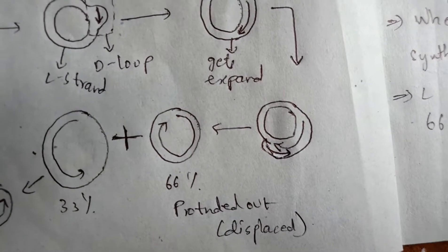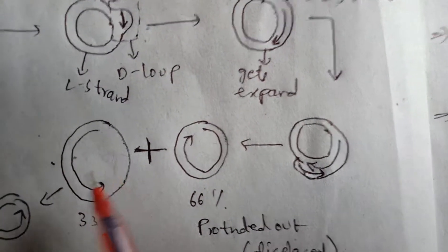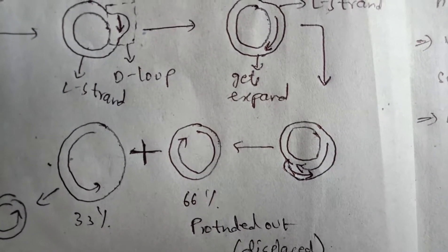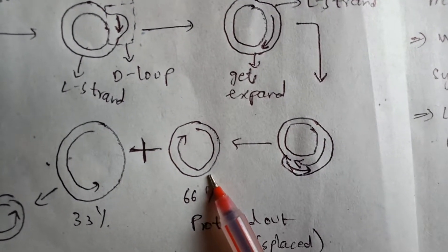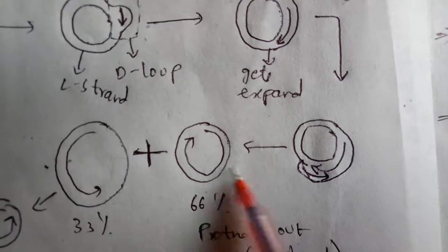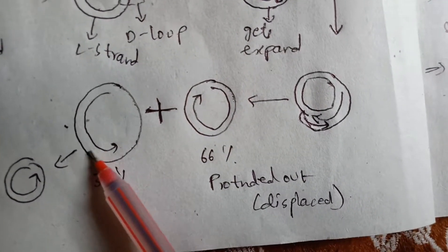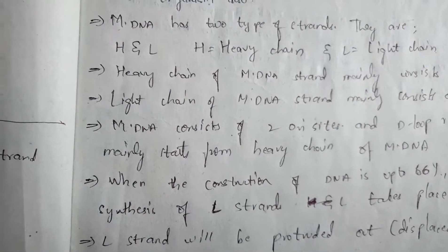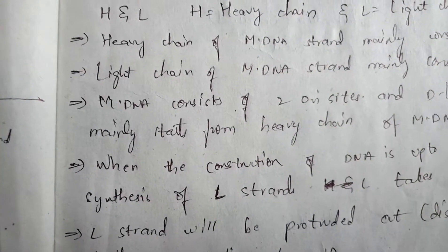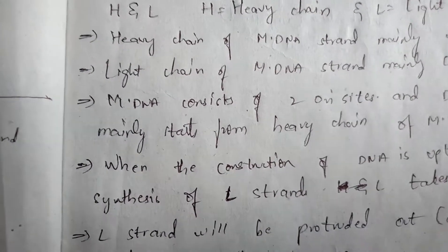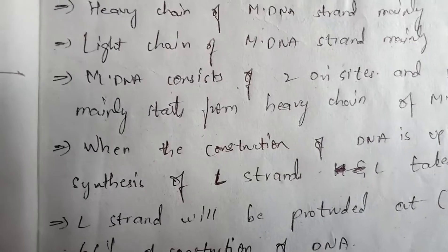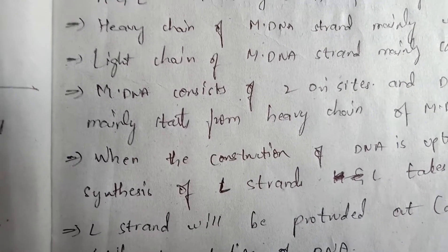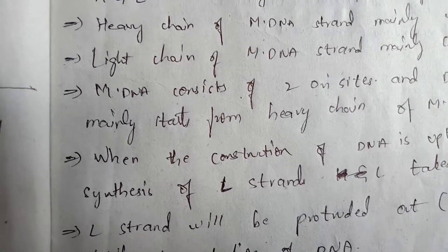After 66% elongation, the L strand gets protruded out. The heavy chain gets protruded as well. After completion of 66% of DNA formation, displacement occurs and then the remaining DNA is constructed. In summary, the three types of replication are: linear replication, rolling circular replication, and D-loop replication — also known as unidirectional or displacement loop replication. Thank you for watching.